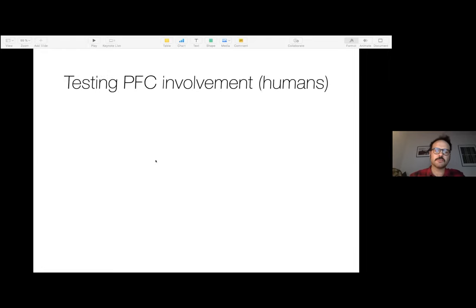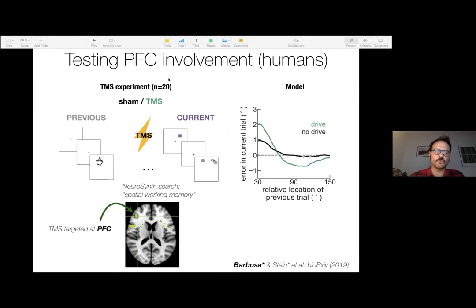So what we did is the similar task, but now instead of, so with an extra set of 20 subjects, but now instead of EEG, we had TMS delivered at the reactivation period. So during the fixation. And we had two controls. We had one on some trials. We didn't deliver anything. On other trials we delivered TMS. And we target TMS at PFC selected from this meta study from the Neurosync. And on other trials, on other sessions, we targeted vertex. So that's what we expect that in vertex, nothing happens.